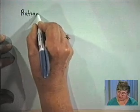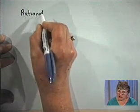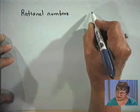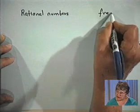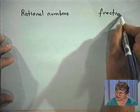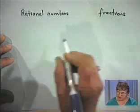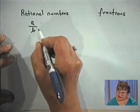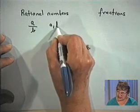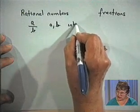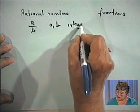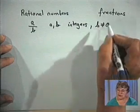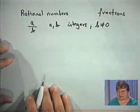Remember that rational numbers are what you have considered before as fractions. A rational number is a number that we can write as a quotient of two integers. It's important to realize that a and b have to be integers, and in particular, that the number b cannot be equal to 0, because we cannot divide by 0.